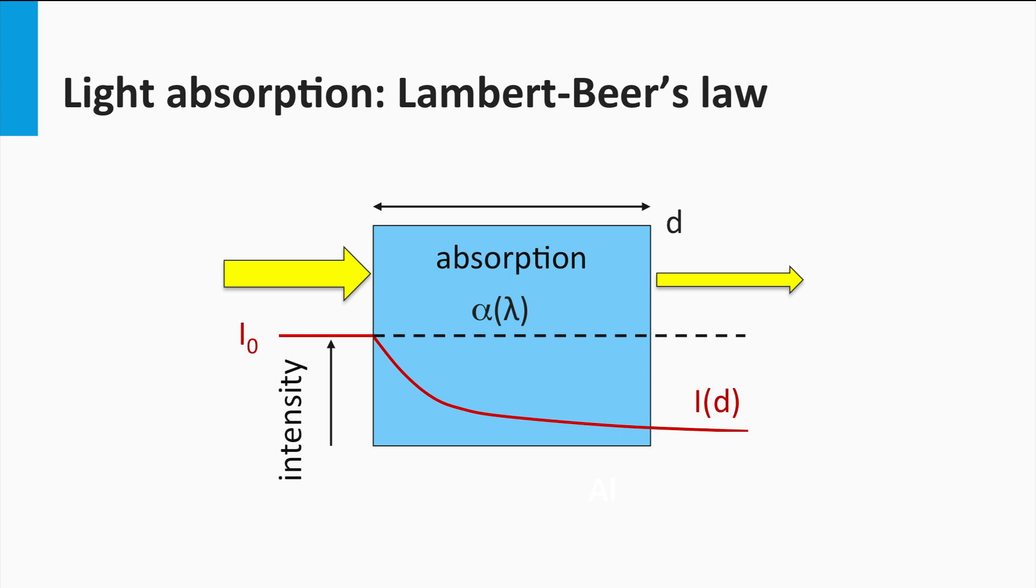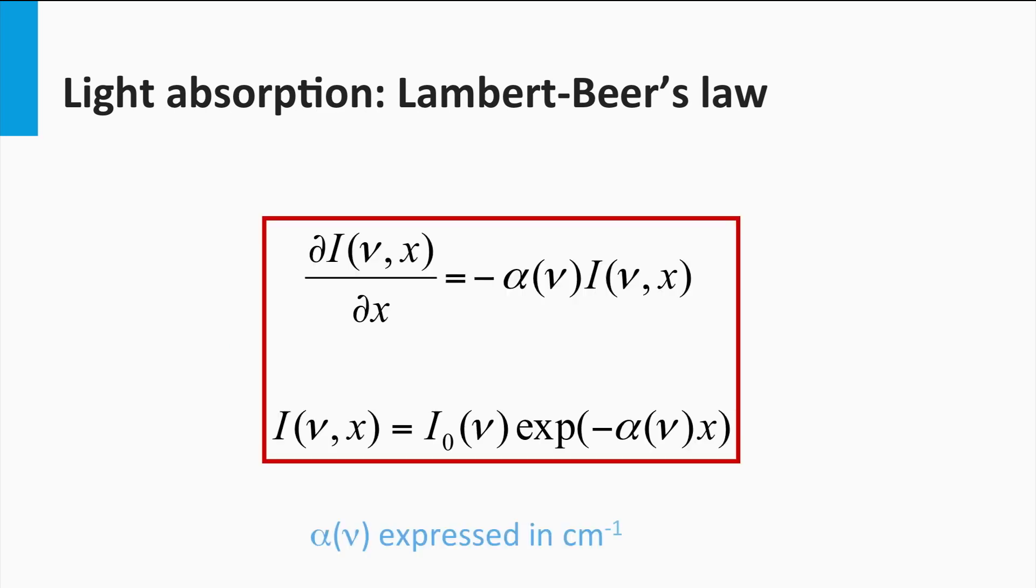The light intensity drops exponentially with distance in the absorber layer. This behavior can be described by the Lambert-Beer's law. This law states that there is a logarithmic dependence between the intensity of the transmitted light through the layer and the product of the absorption coefficient and the path length.